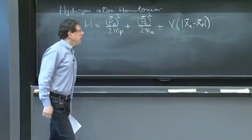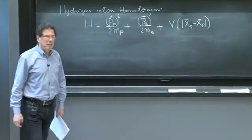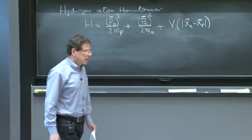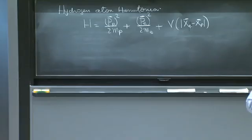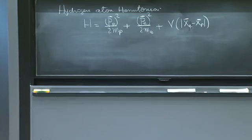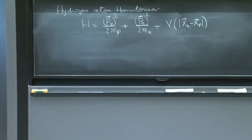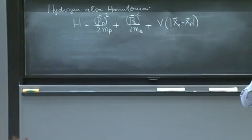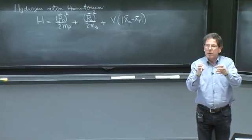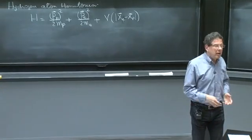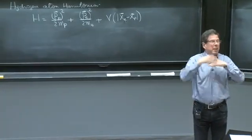What we achieved last time was the introduction of two new pairs of canonical variables. We had the electron position and momentum—that's a pair of canonical variables. The proton position and momenta, that's another pair of canonical variables. They commute; each pair, the two operators commute to give iℏ. But the two pairs are independent.